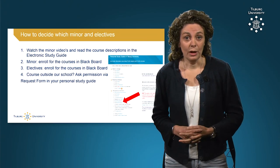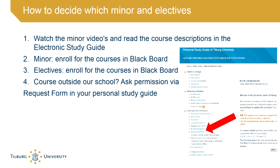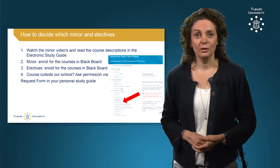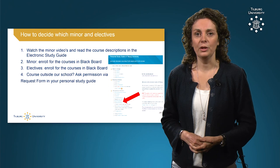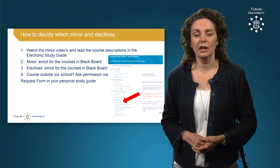So what should you do now? First of all, watch the minor videos and read the course descriptions in the electronic study guide. You don't have to apply for the minors, just enroll for the courses in Blackboard. The same goes for the electives, but if you are going to follow a course outside our school, you need to ask for permission beforehand. You can do so via the request form and your personal study guide on Blackboard.